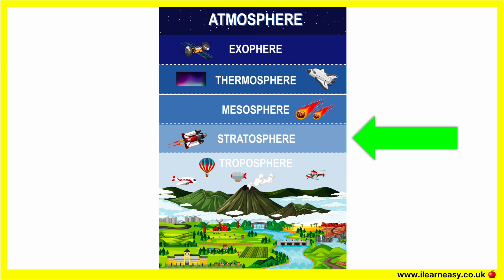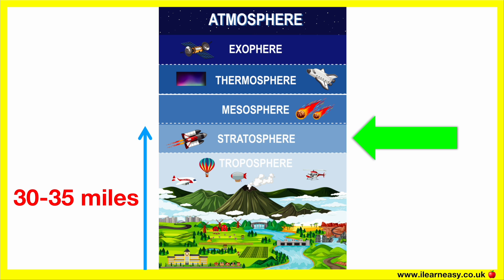The stratosphere is the second lowest layer in the Earth's atmosphere, approximately 30 to 35 miles above the Earth's surface. This layer contains the Earth's ozone layer, which helps to absorb the Sun's harmful ultraviolet radiation. This UV radiation is the reason why the temperature in the stratosphere becomes warmer the higher up you go. The stratosphere is the highest part of the atmosphere that airplanes can fly in, and unlike the troposphere, it is nearly cloud and weather-free.